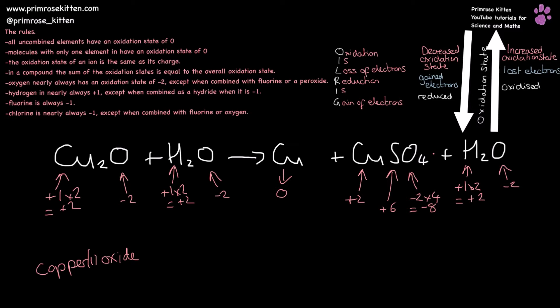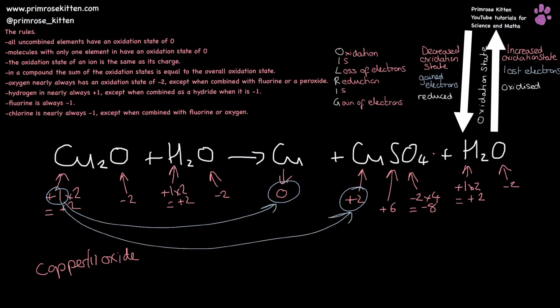So if we look at what has changed oxidation state, we have copper going from plus one to zero and to plus two. Going from plus one to zero, its oxidation state has decreased — that means it has gained electrons, it has been reduced. Going from plus one to plus two, it has increased its oxidation state, it has lost electrons, it has been oxidized. So in this reaction, copper has been reduced and copper has been oxidized, making this a disproportionation reaction because the same element has been both reduced and oxidized.